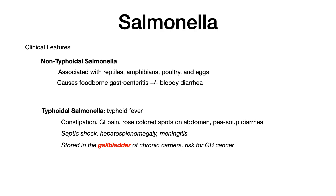There are two subtypes: non-typhoidal and typhoidal salmonella. Non-typhoidal salmonella is what people classically think of — a foodborne gastroenteritis plus or minus bloody diarrhea. This type is associated with reptiles, amphibians, poultry, and eggs. If you see any of these buzzwords on your exam, think non-typhoidal salmonella.